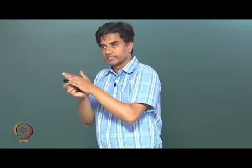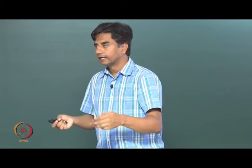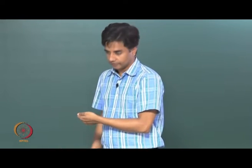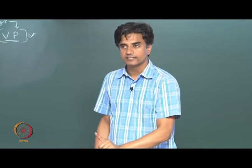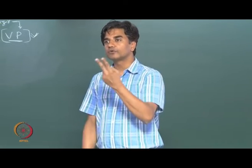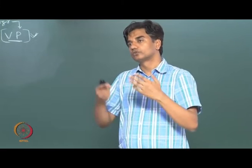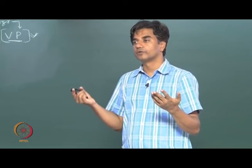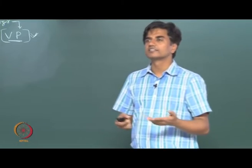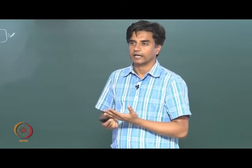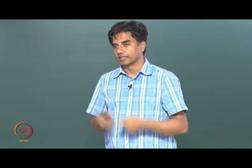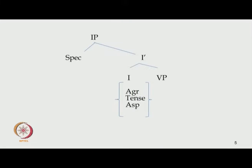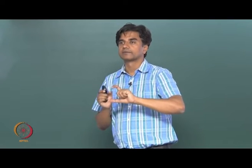That is also a reason for separating all features and allowing the subject to originate in VP. And finally, sometimes a spec of IP where IP is a complement appears to receive accusative case and has to be handled separately — that is about ECM, exceptional case marking. So we are not only saying we have two different ways for marking nominative and accusative case; we are also saying those two different ways are not enough. The theory looks very weak with IP. The one compelling reason to keep IP intact is that it shows agreement, tense, and aspect as the head of the sentence.